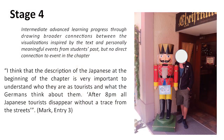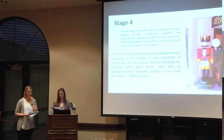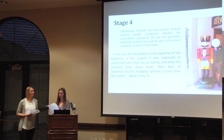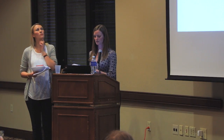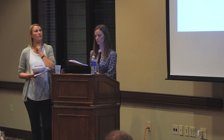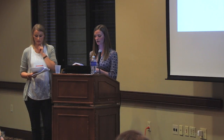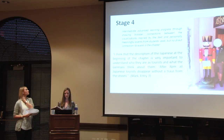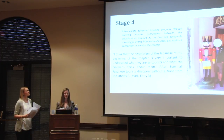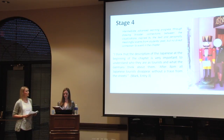Stage four, intermediate-advanced learning progress, is illustrated by another entry from the Rothenburg chapter. The learner was able to draw broader connections between the visualization of a text event and a personally meaningful event from his own past. Mark wrote that the description of Japanese tourists at the beginning of the chapter is very important for understanding who they are as tourists and what Germans think of them, quoting Kaminer: 'After 8 p.m., all Japanese tourists disappear without a trace from the streets.' While not directly referencing his personal experience, Mark posted a picture of himself in what looks like Rothenburg.